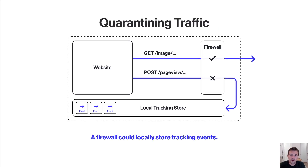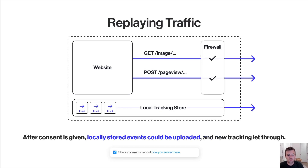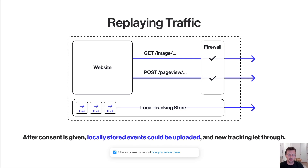Furthermore, a firewall could quarantine traffic — when a tracking event gets blocked, it could be placed into local storage on the user's device so that traffic can be replayed later if the user decides to give consent and share information about how they arrived at that conversion point. The firewall could then be opened up to allow any further tracking through.